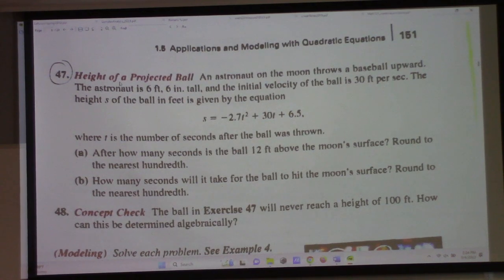Right there, that is telling us what? That is the height of the ball in feet after T seconds. So, then what does he ask us? Question part A. After how many seconds is the ball 12 feet above the moon's surface? Round to the nearest hundredth. How do we answer part A? What do we have to solve? We set the equation to 12. We should set the formula to 12 because the formula gives us the height.